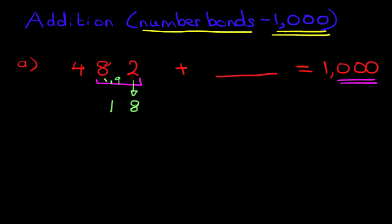Now if that equals 100, what that means is that this 4, because we've taken it to 100, this 4 has become 5. Now what number do we need to add to 5 for it to become 10?